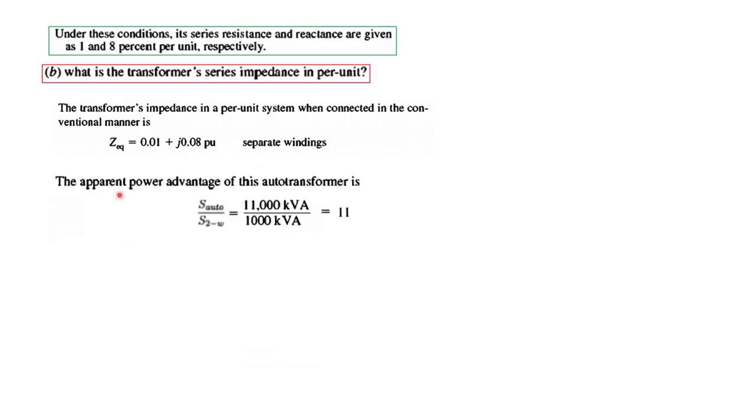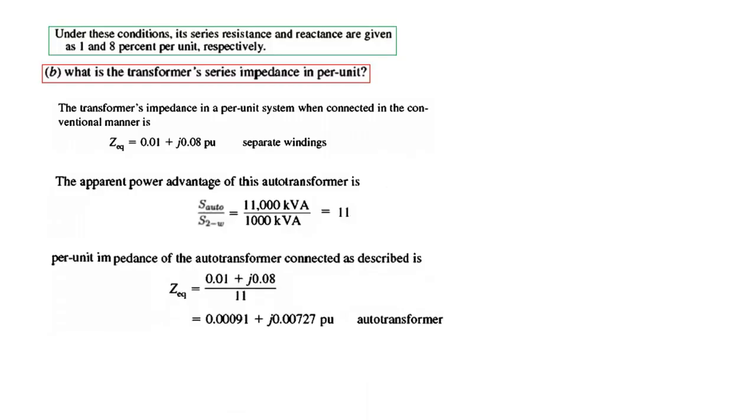The autotransformer has an advantage of 11 times power. We can say that the impedance will reduce by 11 times because the power is increasing. So impedance will reduce. The new impedance of the autotransformer will be calculated accordingly.